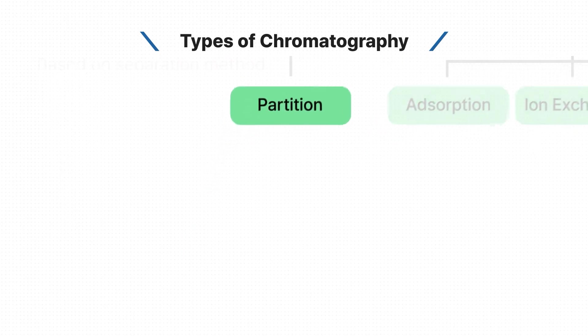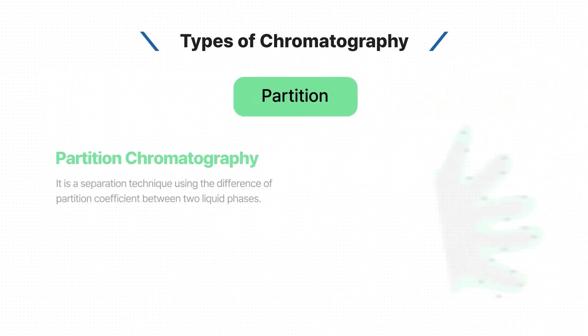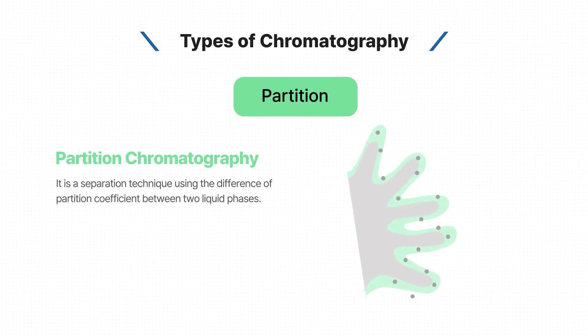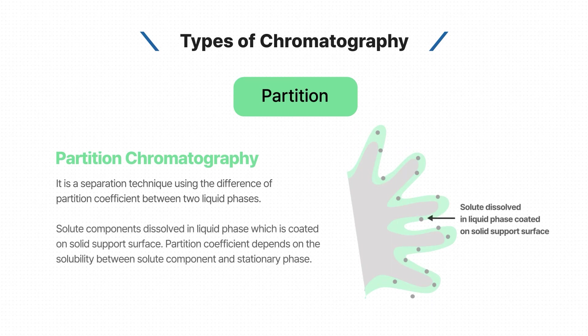Partition chromatography is one of the separation techniques using the difference of partition coefficient between two liquid phases. Solute components are dissolved in a liquid phase coated on a solid support surface. The partition coefficient depends on the solubility difference, so the more soluble a compound is, the later it comes out.